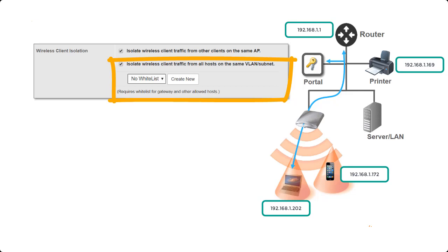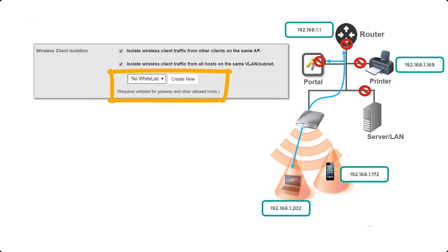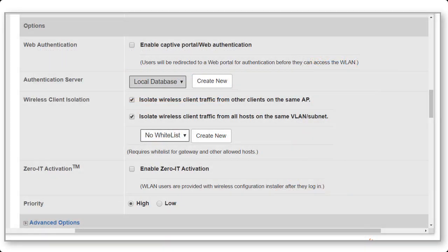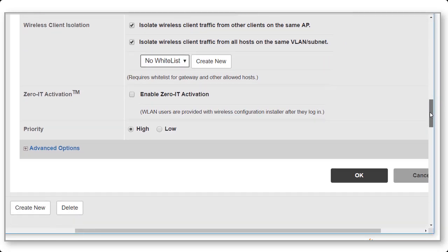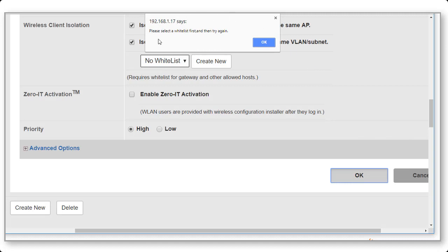Next we'll select to isolate wireless client traffic from all hosts on the same VLAN and subnet. The effect will be to block access to any devices on the same VLAN as our connected device. However, this solution has a problem: we can't reach the DHCP server, the default gateway, the portal, or any other local resources we need access to. You'll see there's an option to specify a whitelist — if one doesn't exist, we can create new. Interestingly, if there is no whitelist, we can't actually save this setting. In the controller, if I tick to isolate clients and scroll down and click OK, I get an error message telling me I need to select a whitelist.